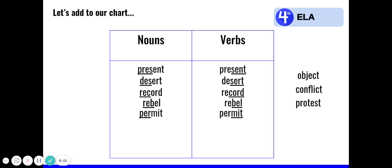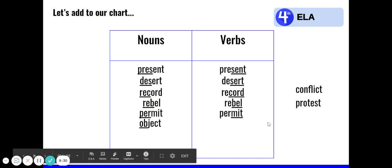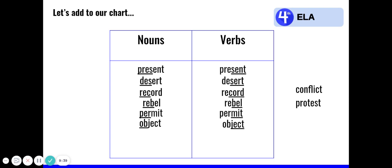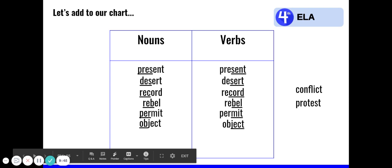Next, we have the word object. When I accent the first syllable, it means a material thing that can be seen or touched. This homograph is a noun. Let's write it under the noun column and underline the first syllable. Object. To make it a verb, it accents the second syllable. So instead of object, we would say object. This means to say something to express one's disapproval. Let's write that under the verb column and underline the accented syllable.